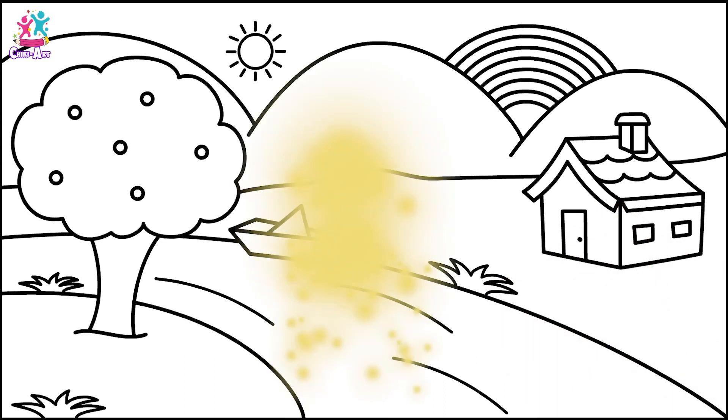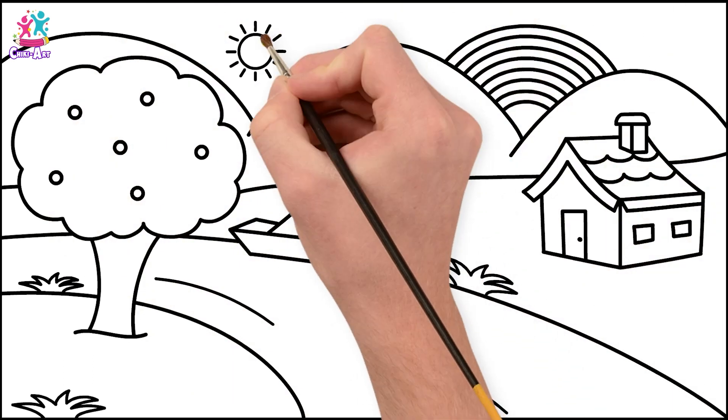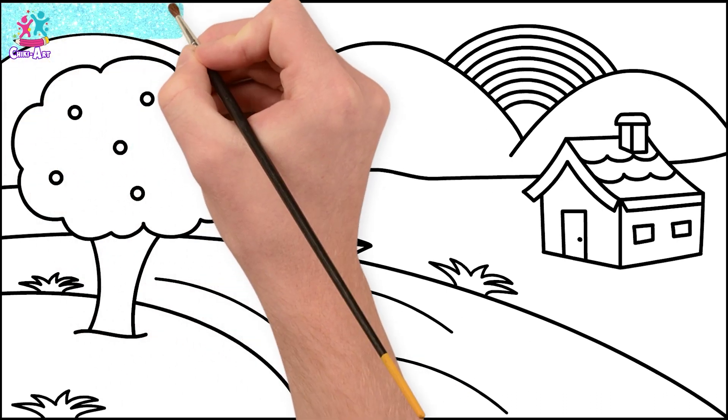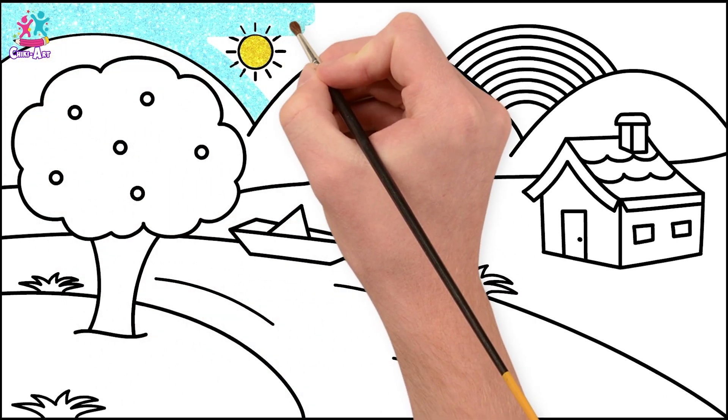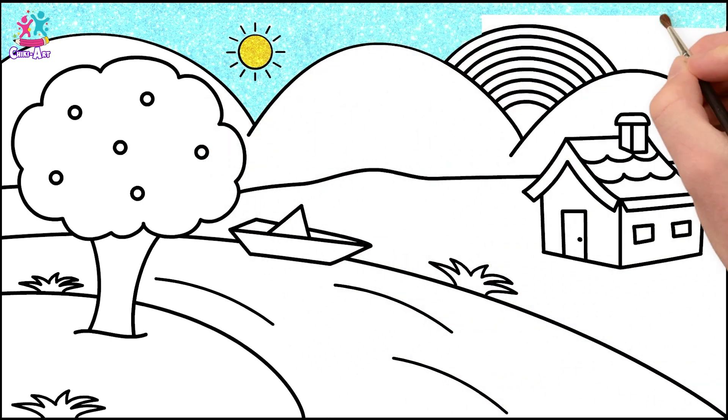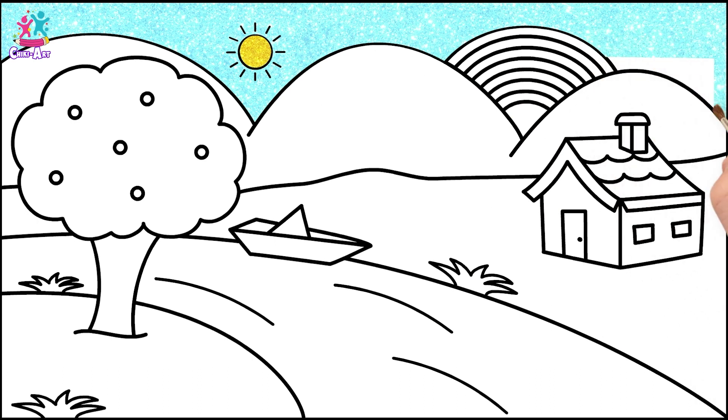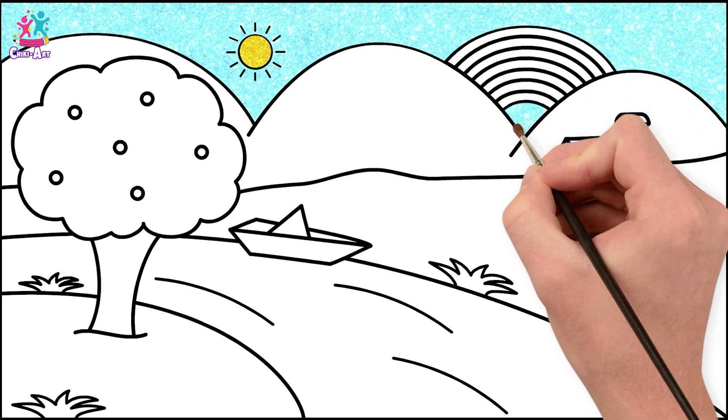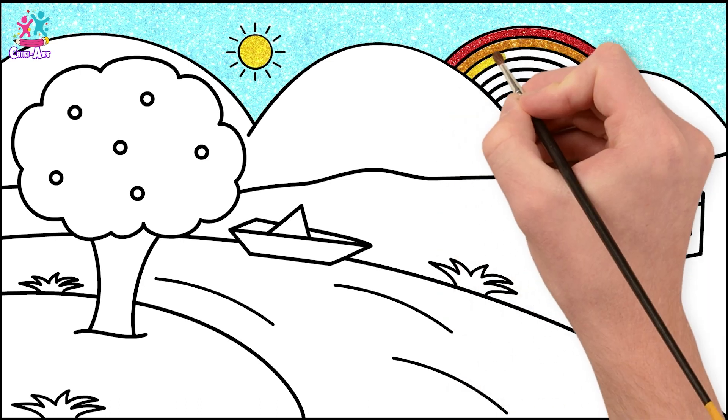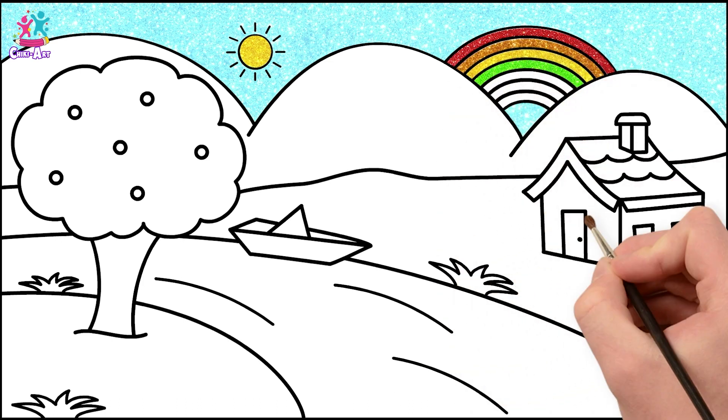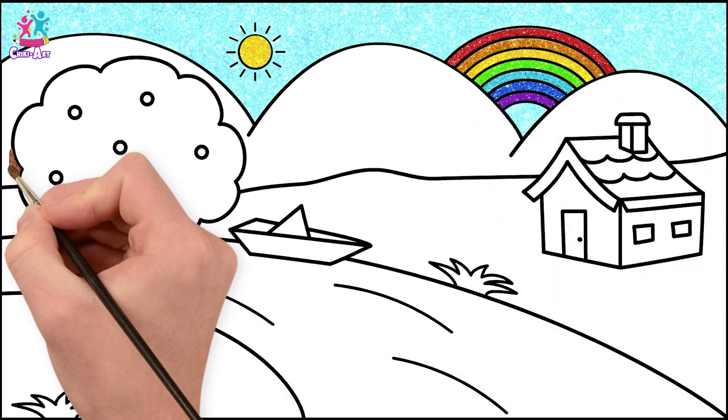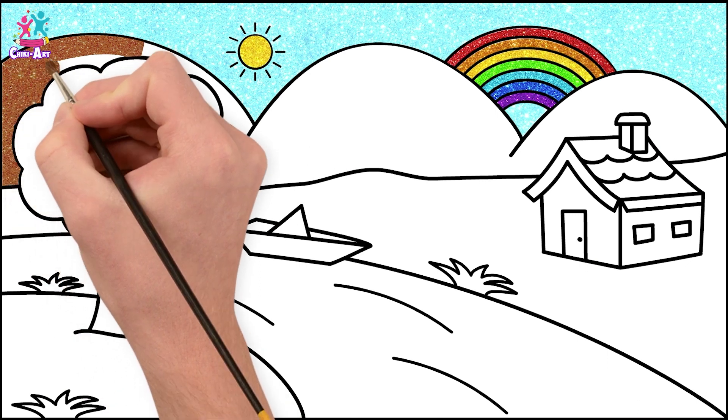And there you have it! We're ready to paint. Yellow sun, a blue sky. You can of course use crayons, coloring pens, pencils, or paint, whatever you prefer. It's going to be a beautiful scene. Okay, let's go for red, orange, yellow, green, blue, dark blue, purple. You can choose whatever colors you like. It's your picture.